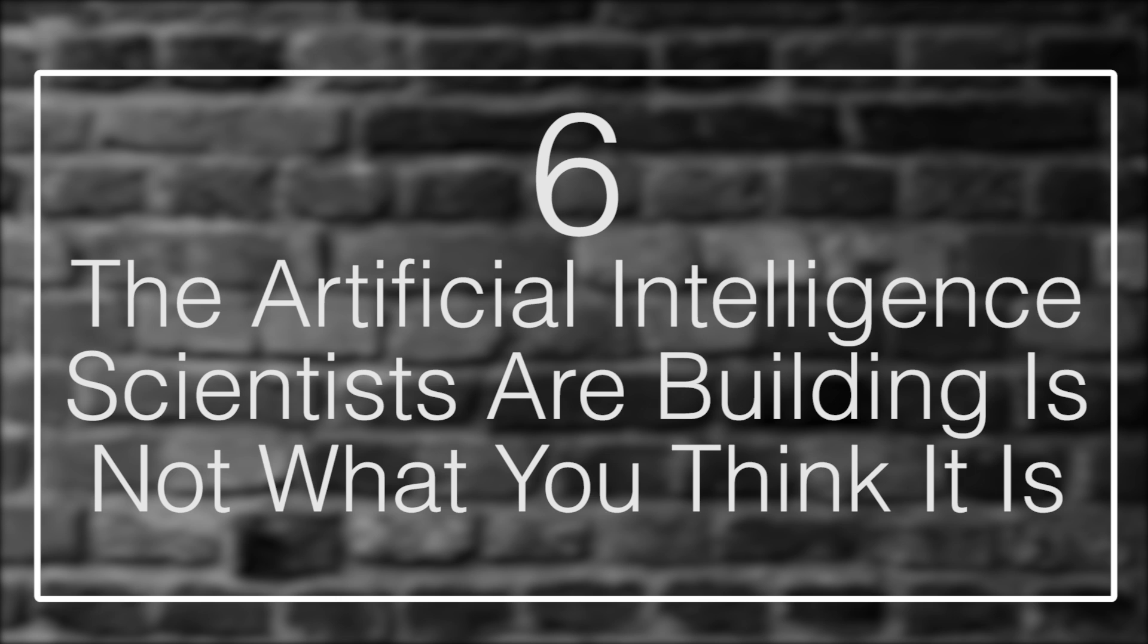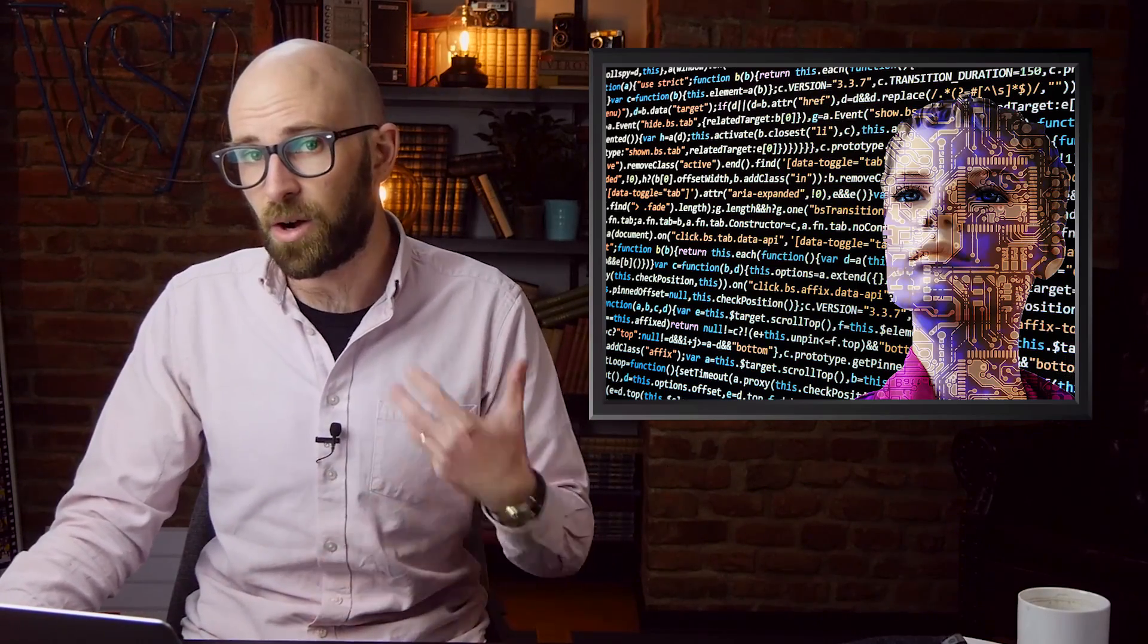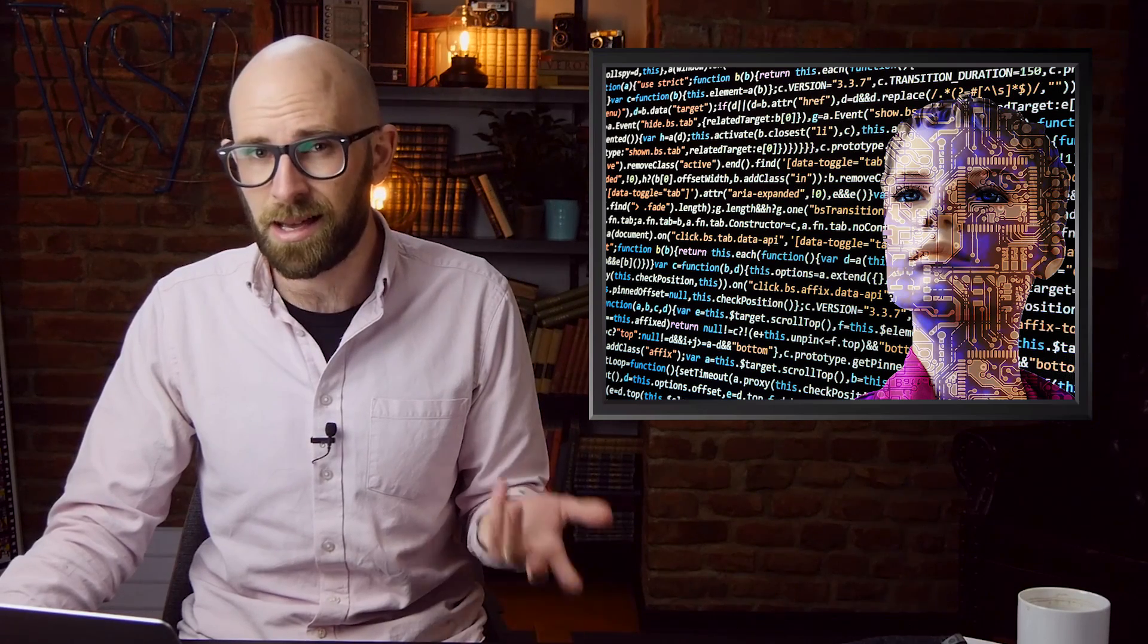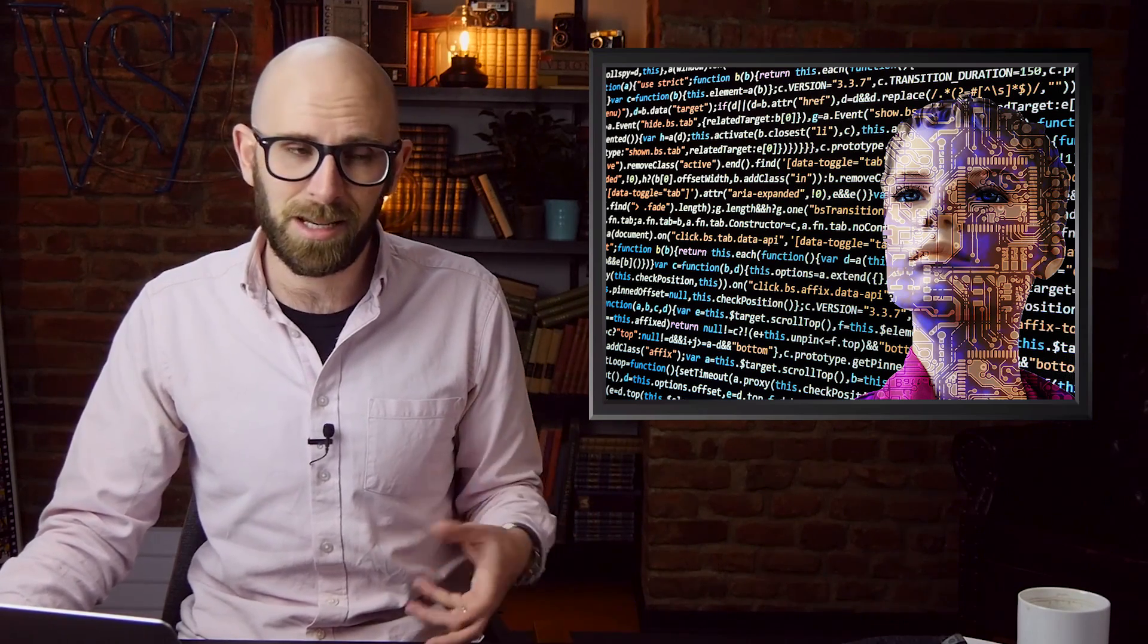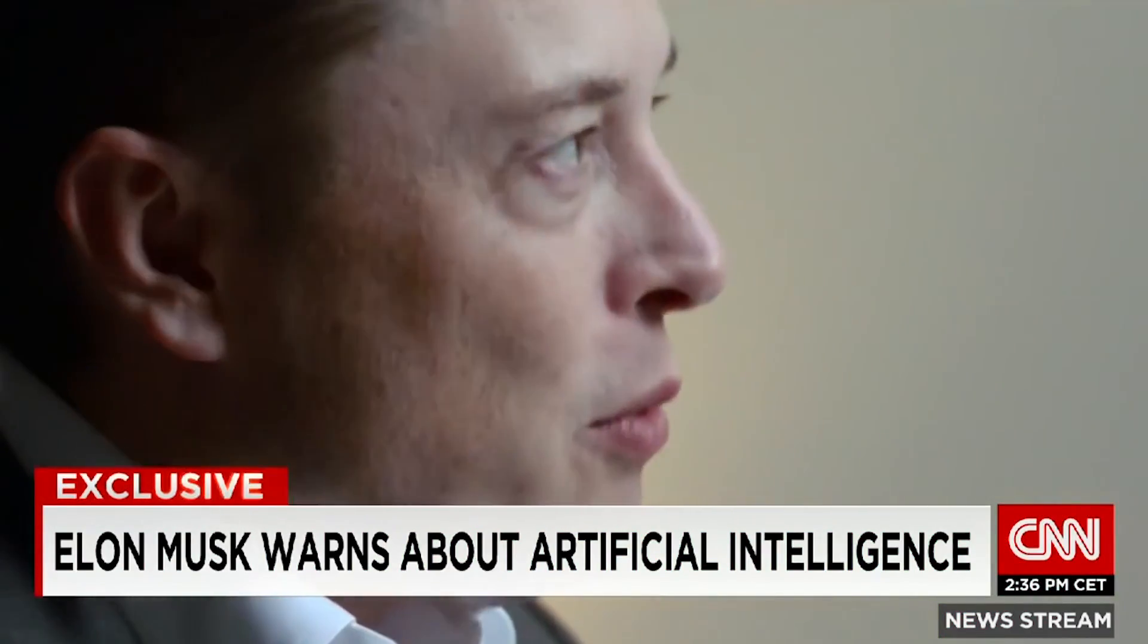Number 6: The artificial intelligence scientists are building is not what you think it is. Artificial intelligence is probably one of the most misunderstood basic scientific theories in science. Movies have done an incredibly good job of twisting people's understanding of artificial intelligence, and unless you've studied computer science, you might not realize quite how silly and wrong most movies have this. In movies, artificial intelligence reaches some sort of consciousness, and people are quite used to this image of AI.